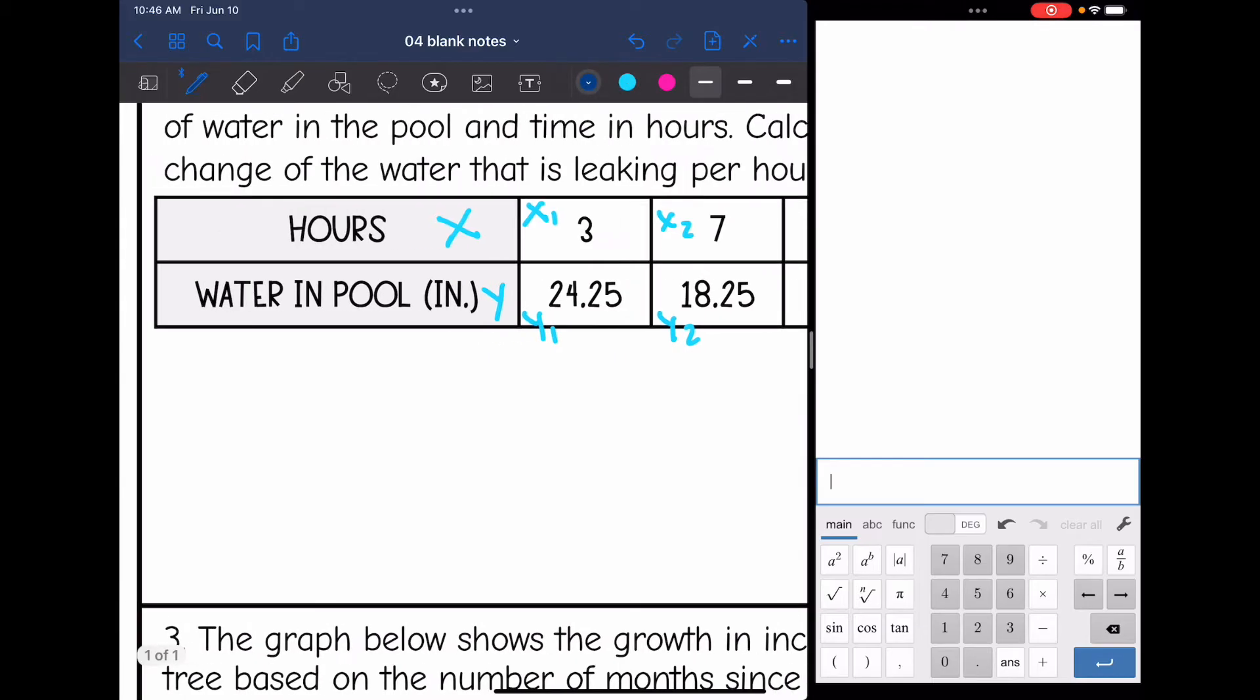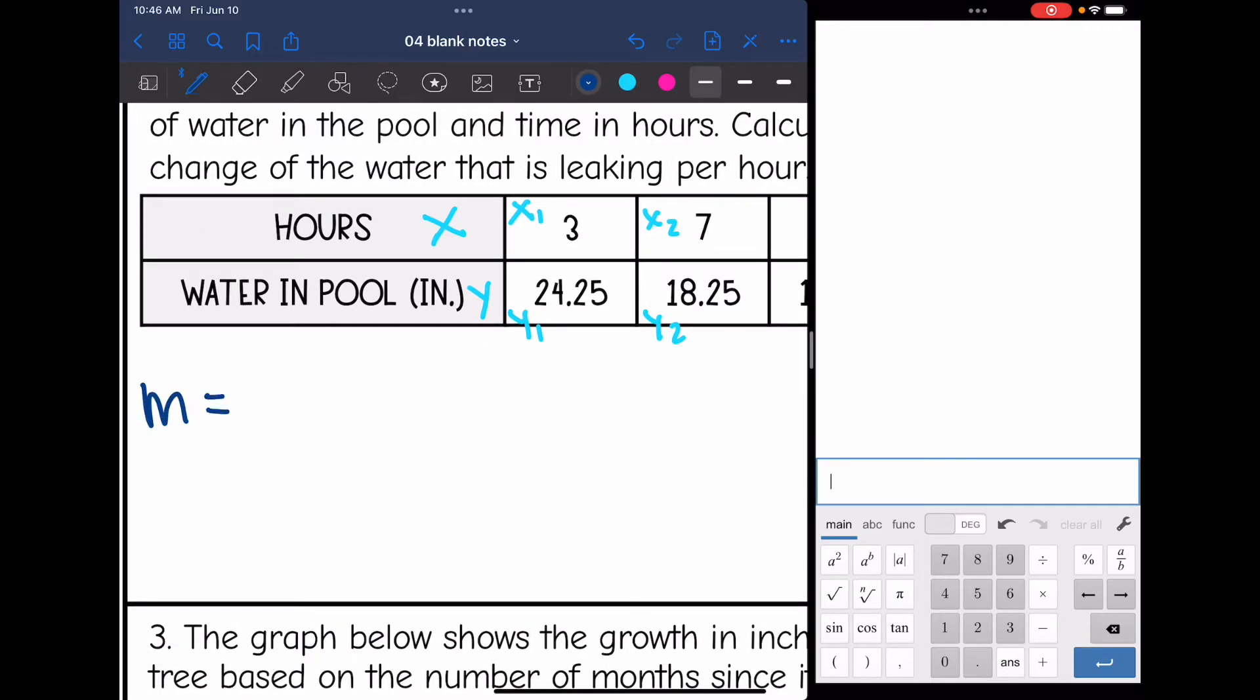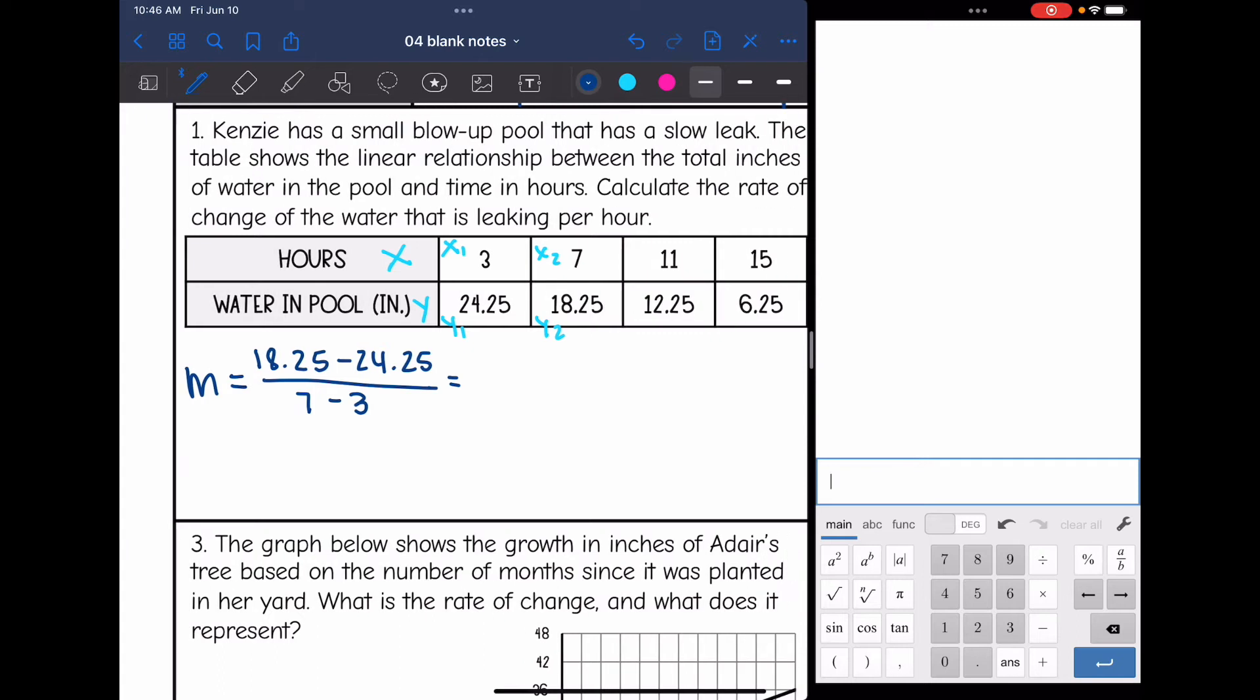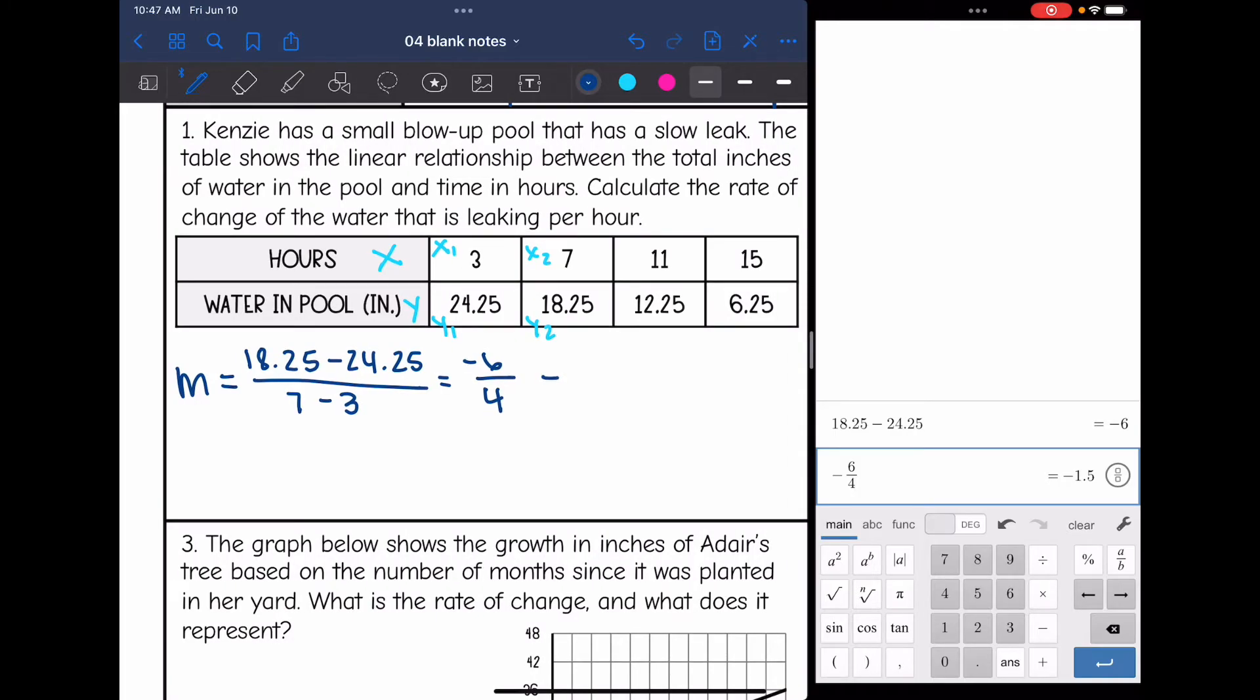And now I will plug into slope formula to find the slope. We will do y2, so 18.25 minus y1, so 24.25, all over x2, so 7 minus x1, 3. Now I just need to simplify. 18.25 minus 24.25 is negative 6. And 7 minus 3 is 4. And then we are talking about the inches that are draining in the pool per hour, so I'm going to change this to a decimal. So the pool is draining 1.5 inches per hour.